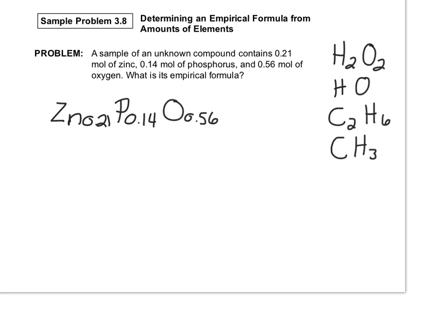The next step is to determine which element has the least number of moles. It's phosphorus at 0.14, the smallest of the three numbers. Then we divide all the moles by that number.